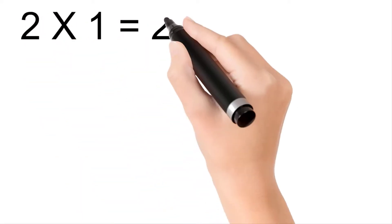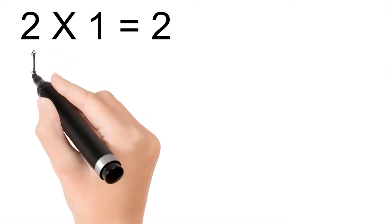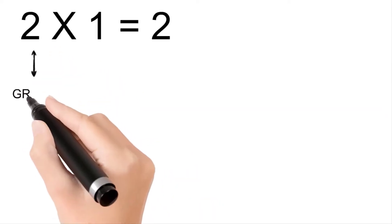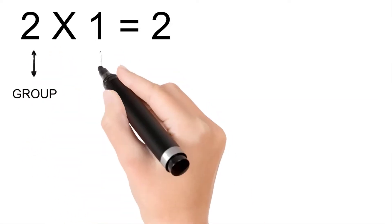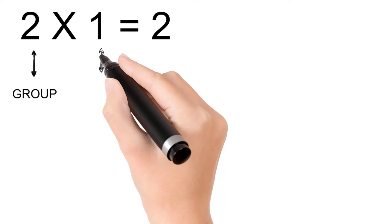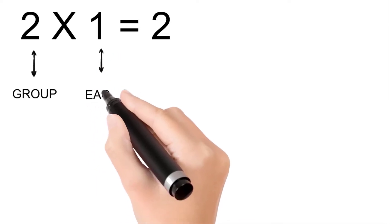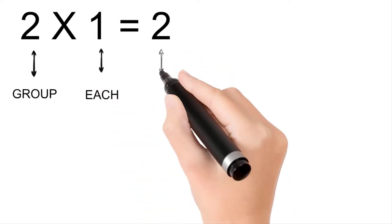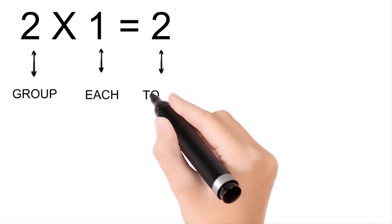Two times one is equal to two. The first two is a group, one is each, and the last two is total.